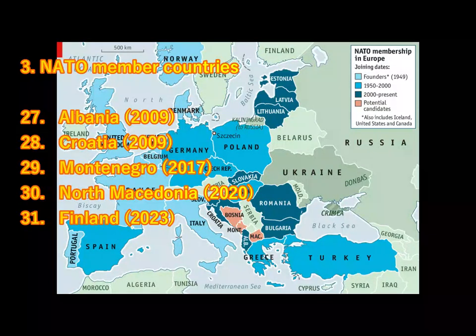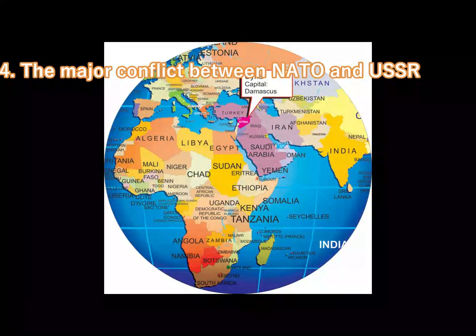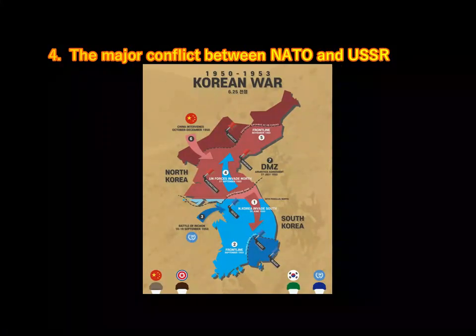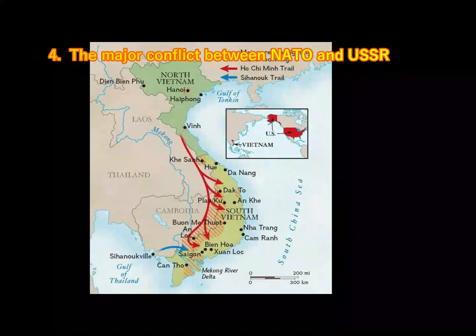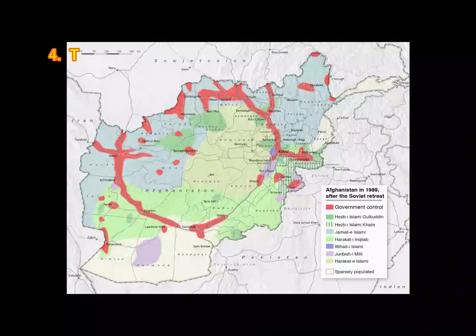The major conflicts between NATO and the USSR from 1950 to 1989: After World War II, NATO and Russia have been involved in many conflicts indirectly. Some of them are the Korean War (1950–1953), the Vietnam War (1955–1975), and the Soviet-Afghan War, which started in 1979 and ended in 1989.